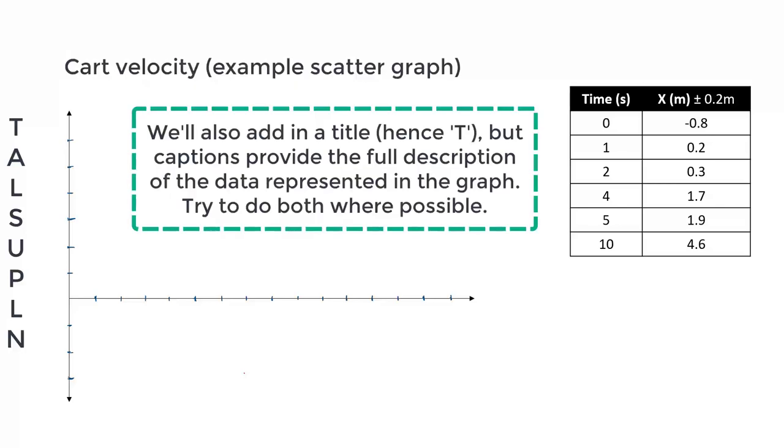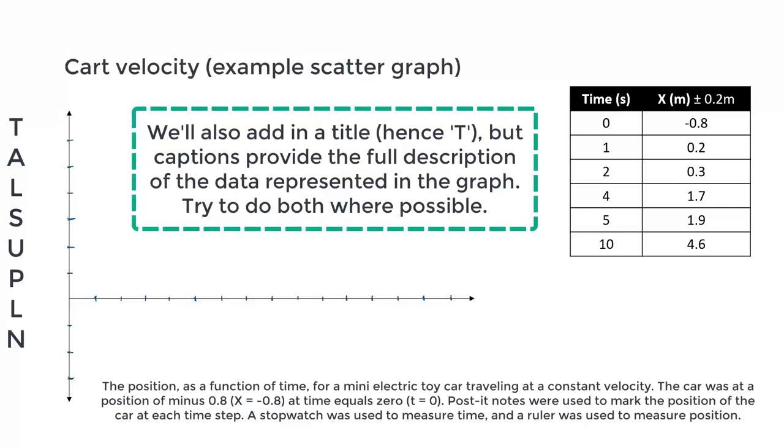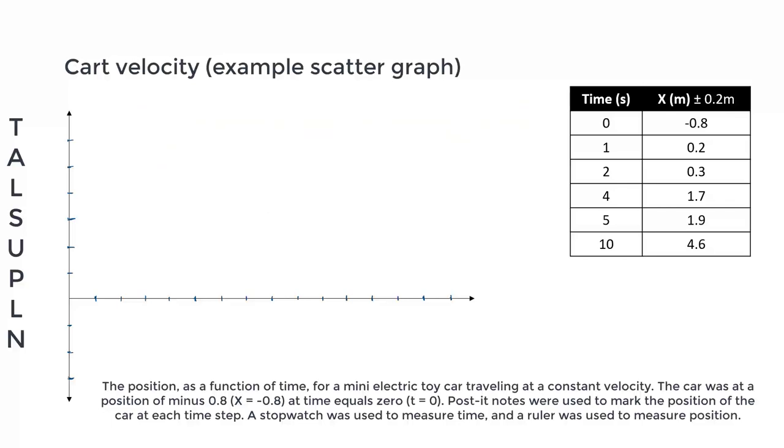Firstly, we want to give our data a caption, which can be: The position as a function of time for a mini electric toy car travelling at a constant velocity. The car was at a position of minus 0.8 at time equals 0. Post-it notes were used to mark the position of the car at each time step. A stopwatch was used to measure time and a ruler was used to measure position.